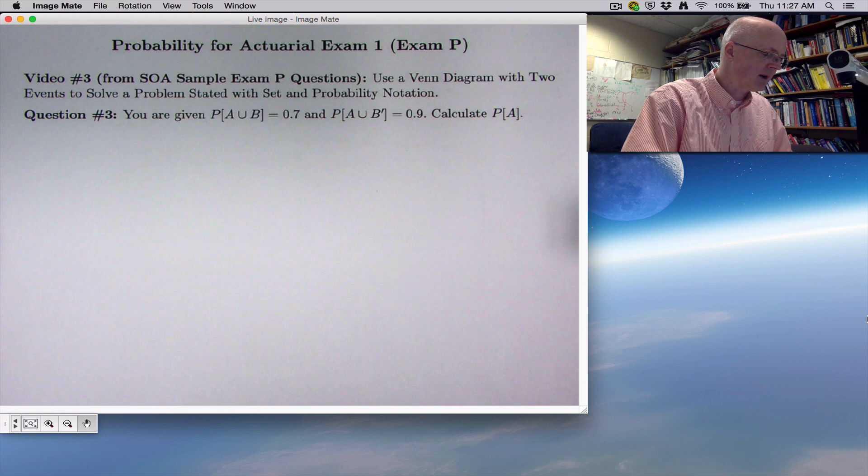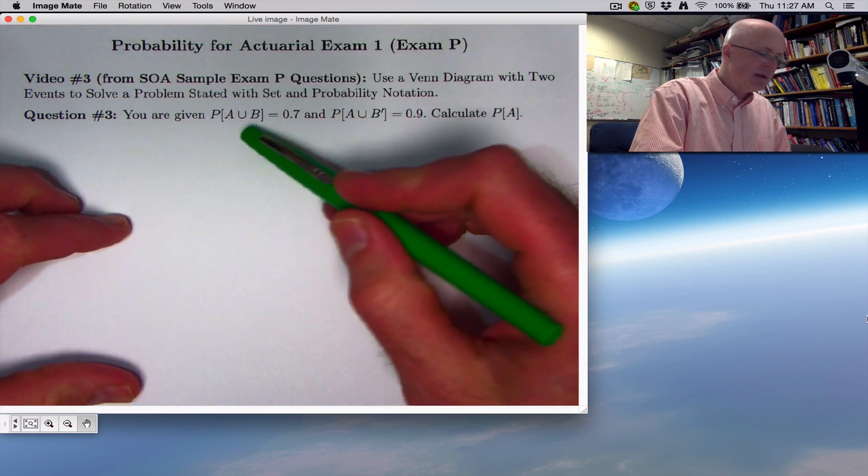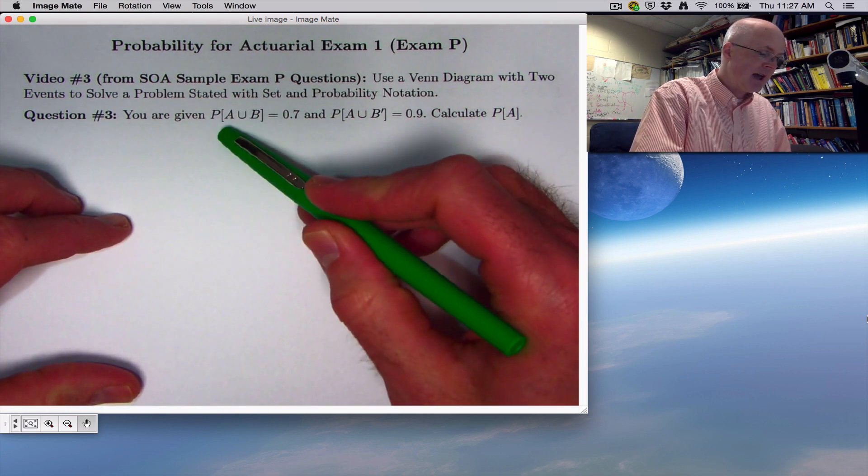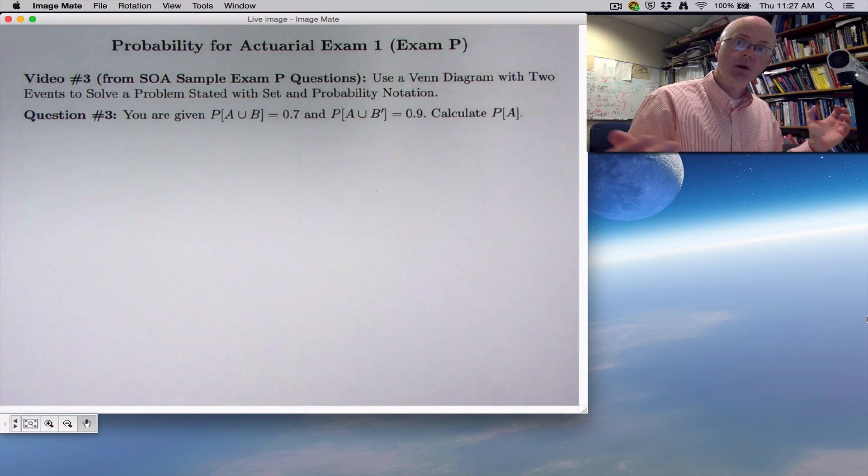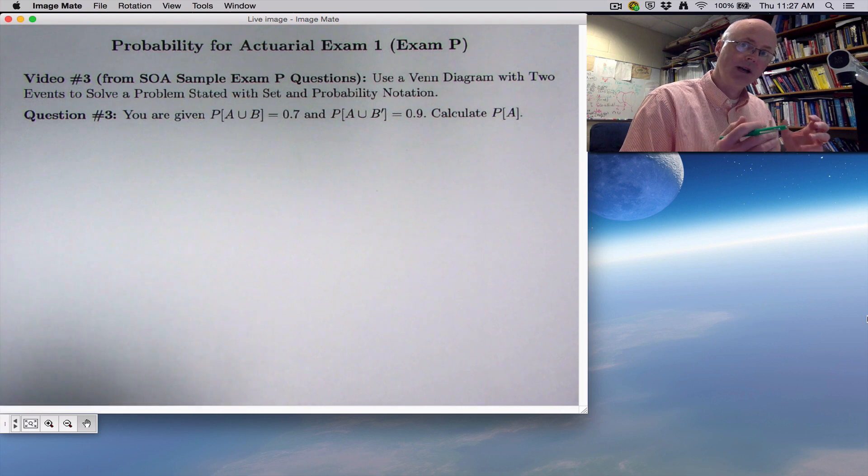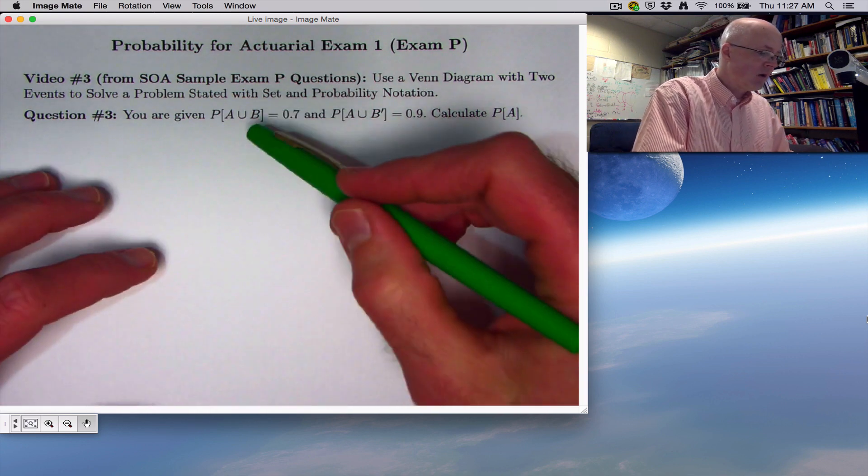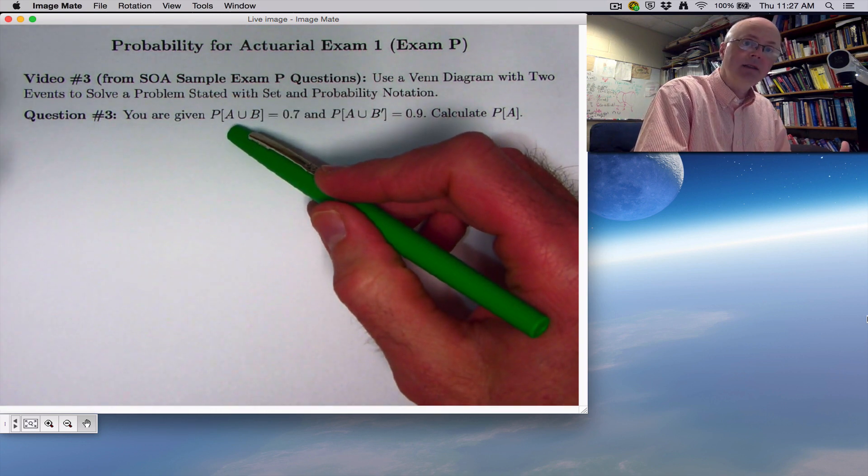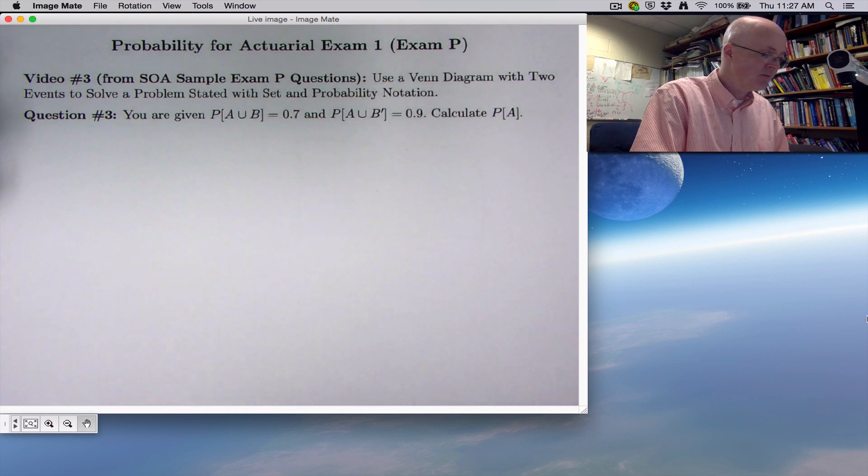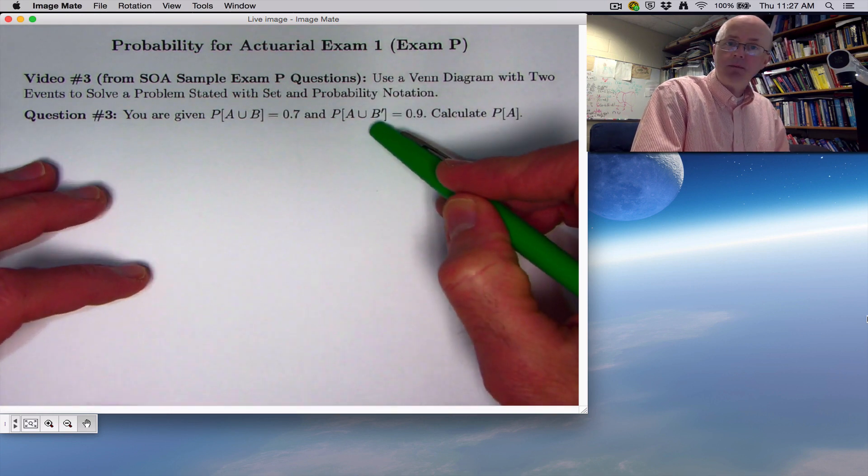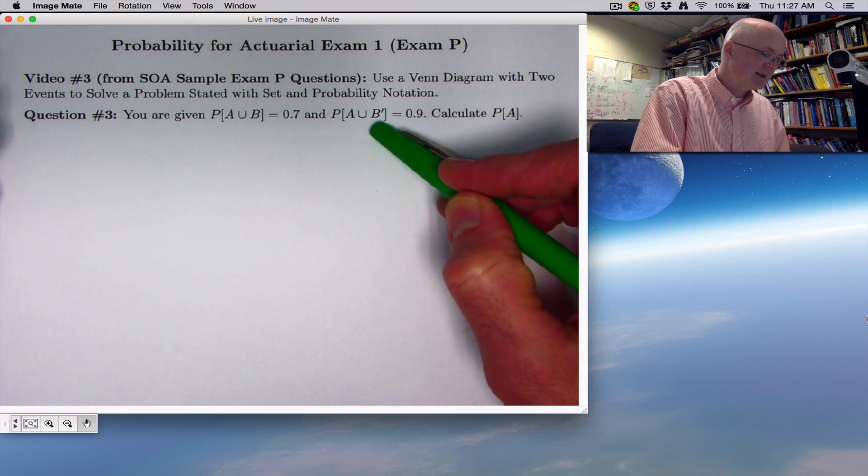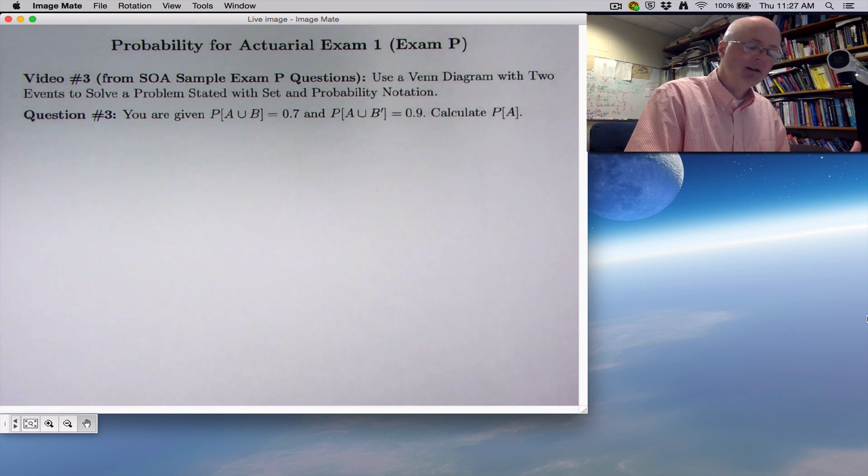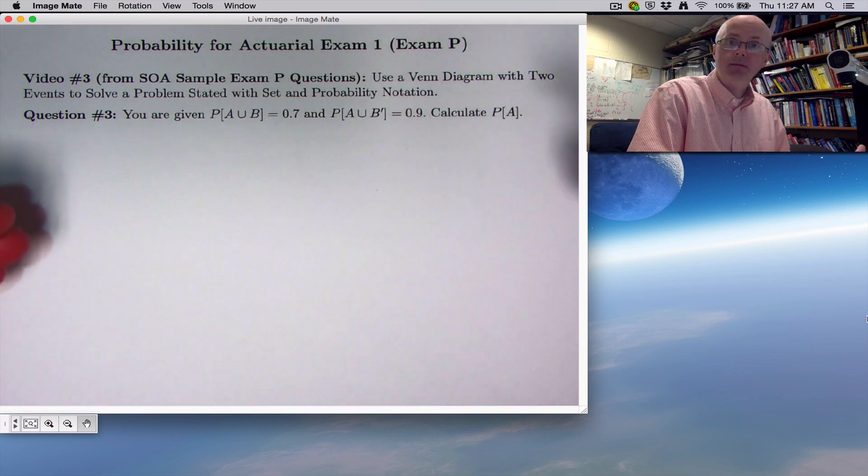I haven't really talked about that yet. You see in here the union of two sets. A union B, this U-looking symbol, stands for union, where you combine the two sets into one bigger set. An element or an outcome in the union is in one or the other or both. You also see a B prime notation here. That stands for what's called the complement of B. As a set, it's everything that's not inside of B. And as an event, it means that B has not occurred.